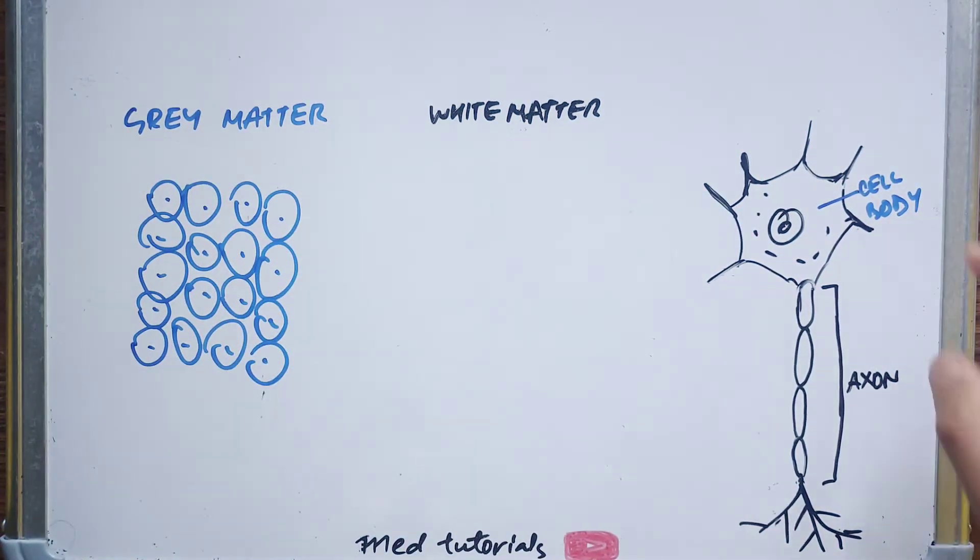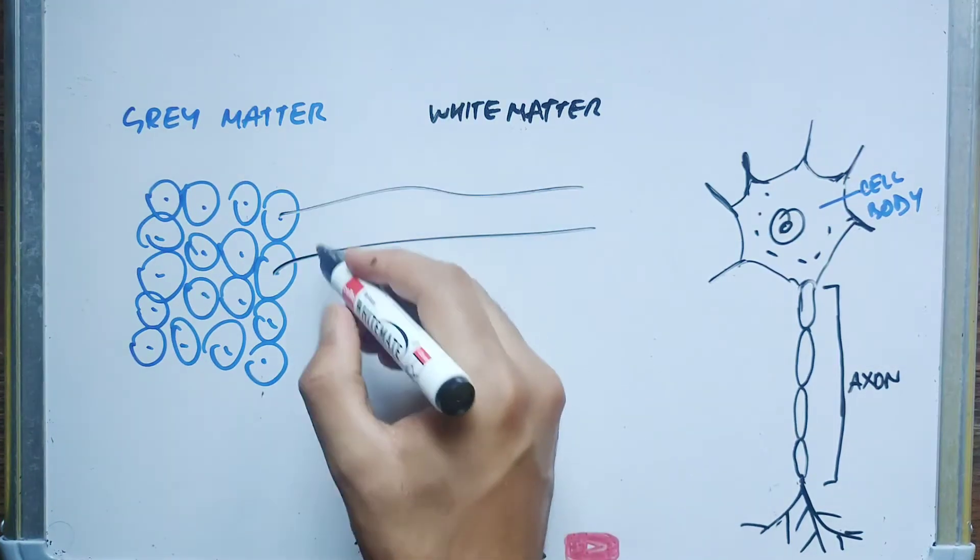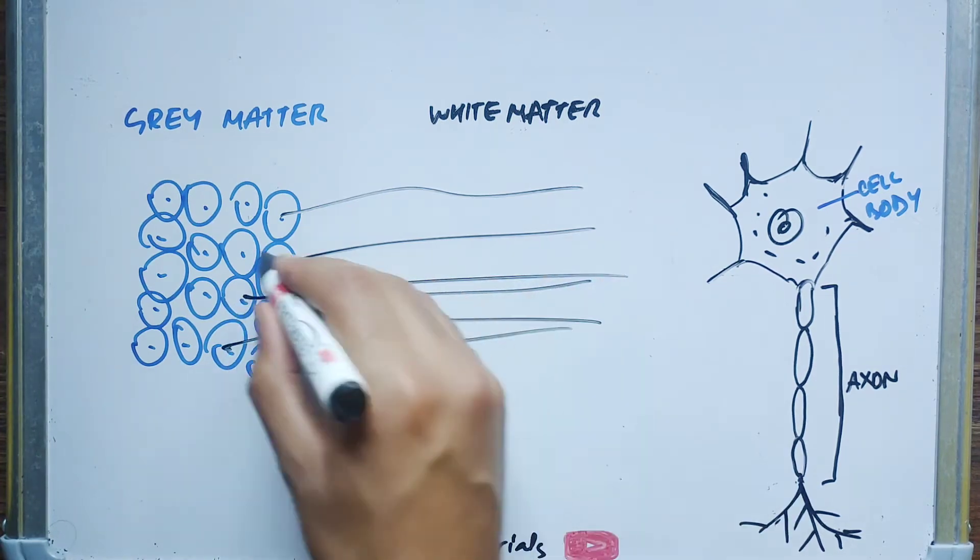Also, cell body ke saath saa neuron ke paas axon bhi hota hai. Now let these be the axons of these neurons.